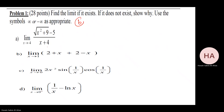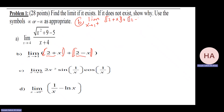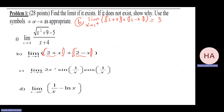Part b involves greatest integer. The limit does not exist directly, so check right and left. From the right at x equals one-plus: two times one-plus is three-something, greatest integer is three; two minus one-point-something is 0.99, greatest integer is zero. So three plus zero equals three. From the left at x equals 0.99: two plus 0.99 is 2.99, greatest integer two; two minus 0.99 is 1.01, greatest integer one. So two plus one equals three. Both sides give three, so the limit equals three.